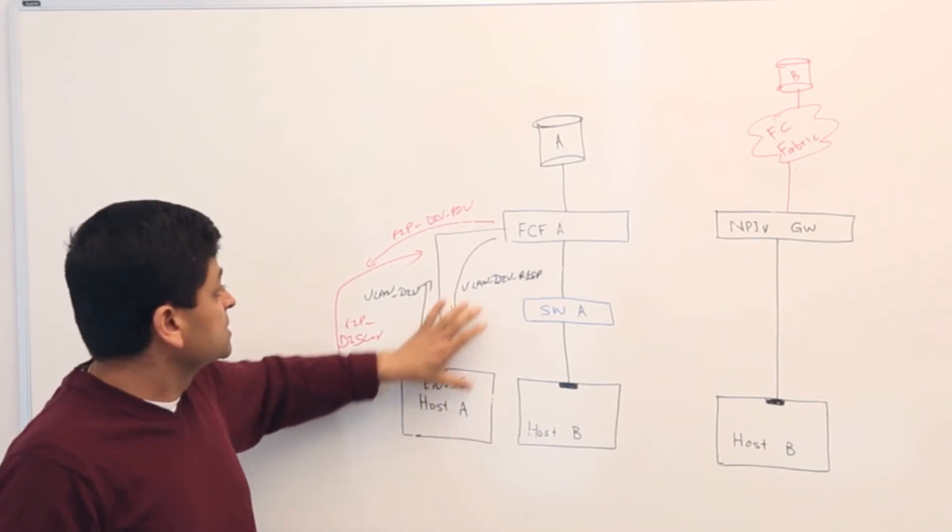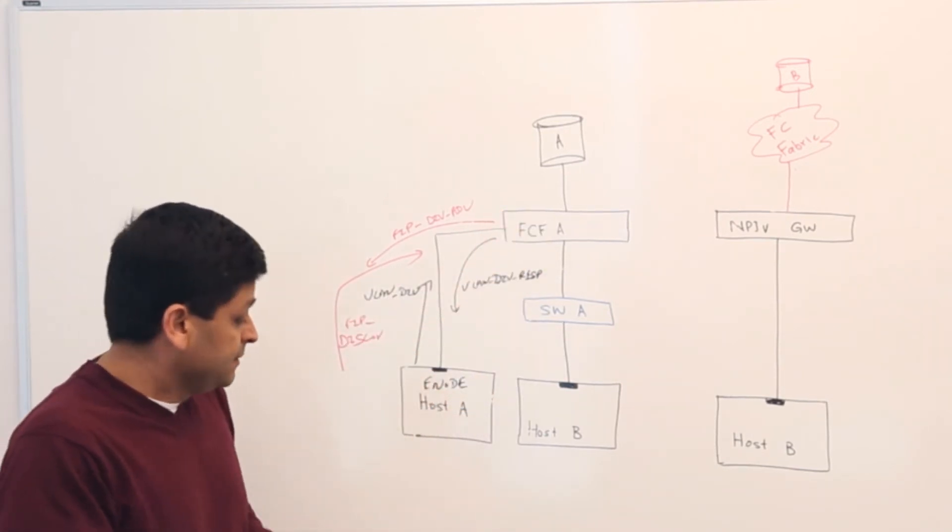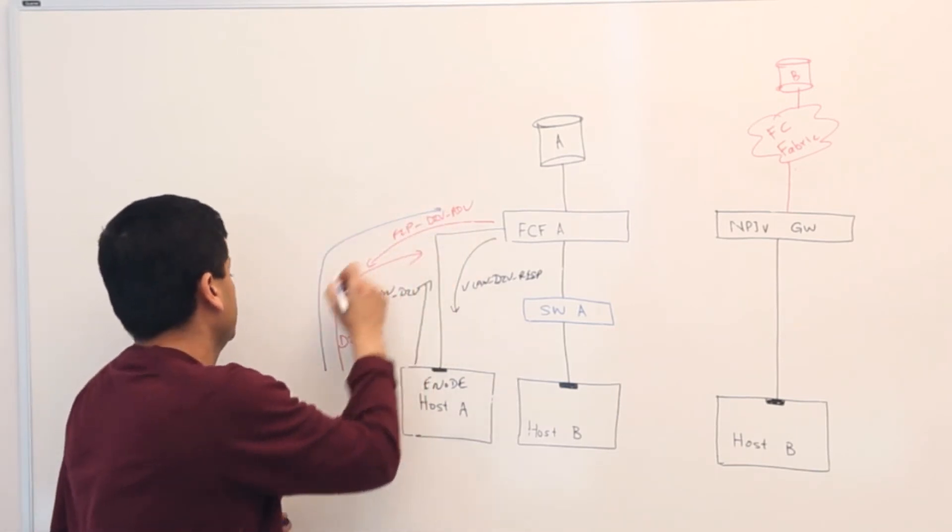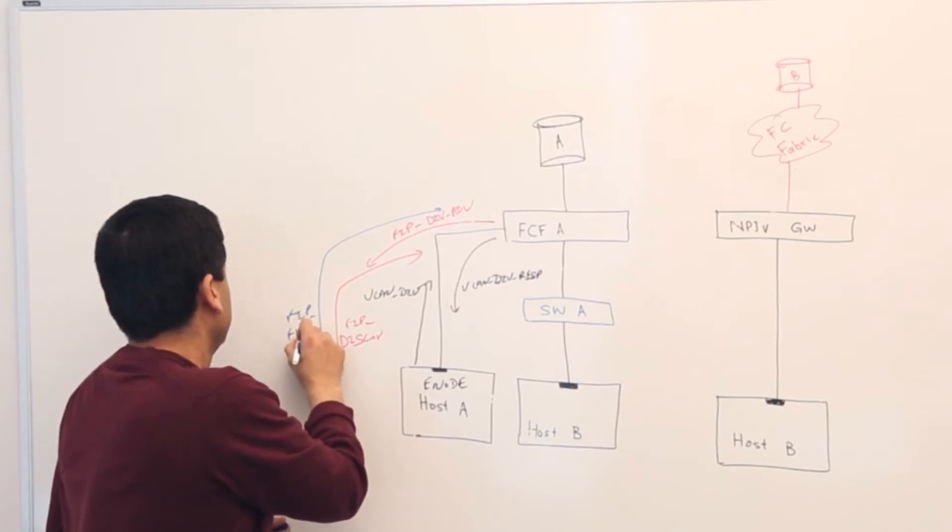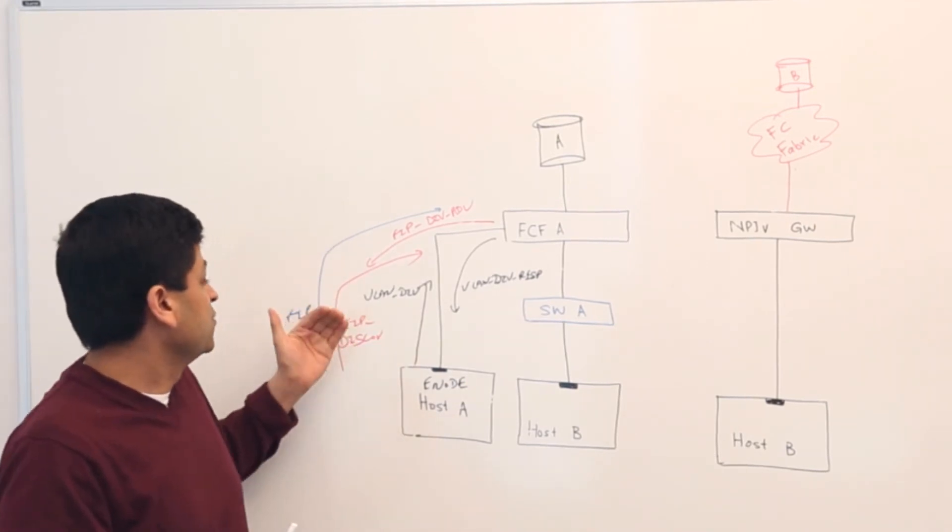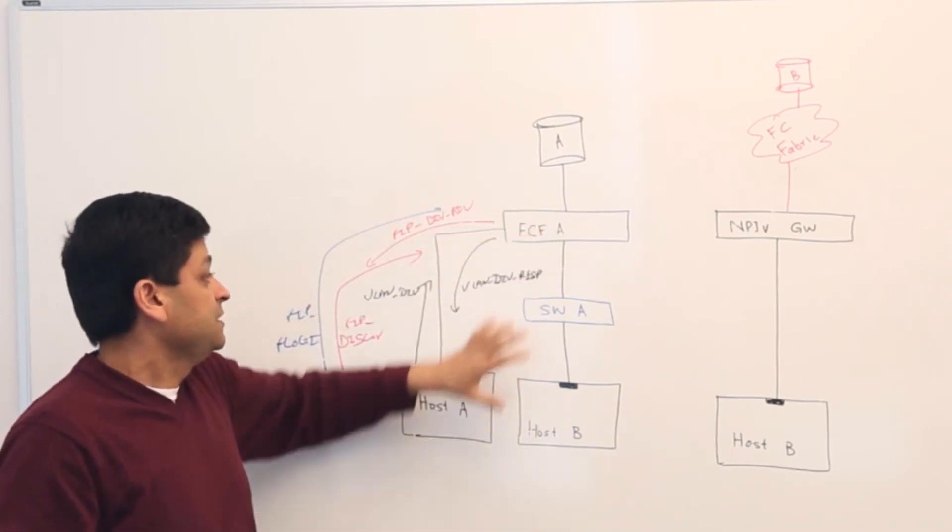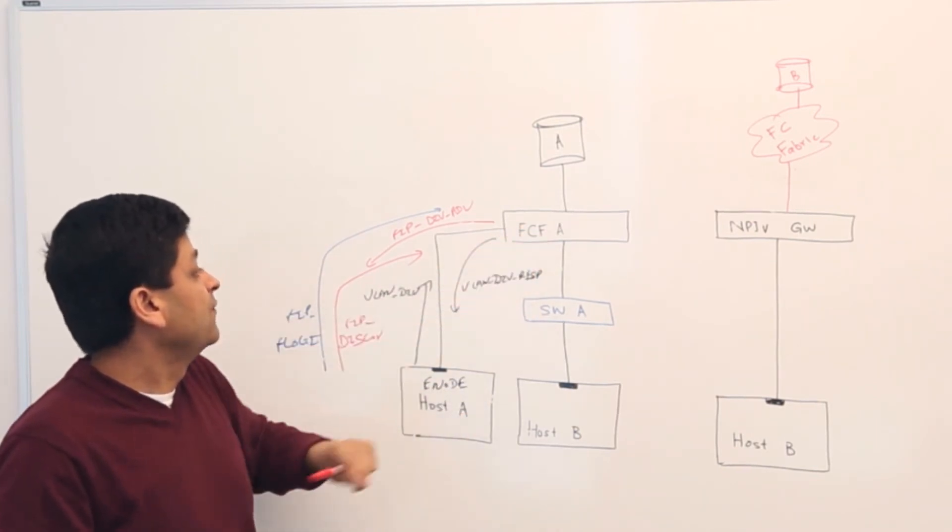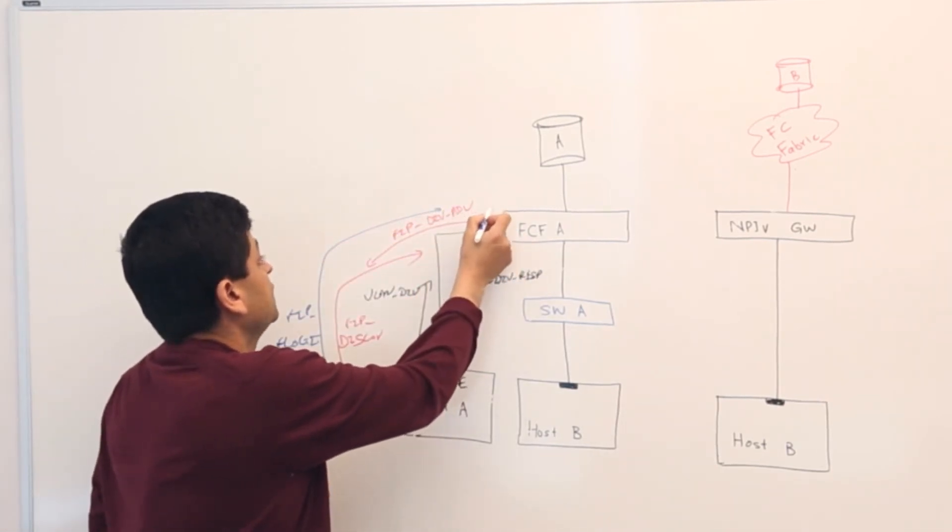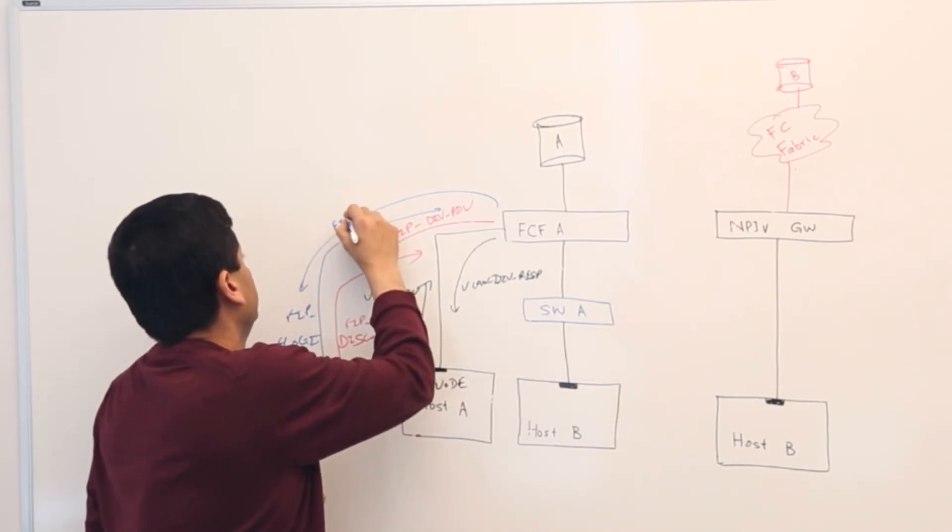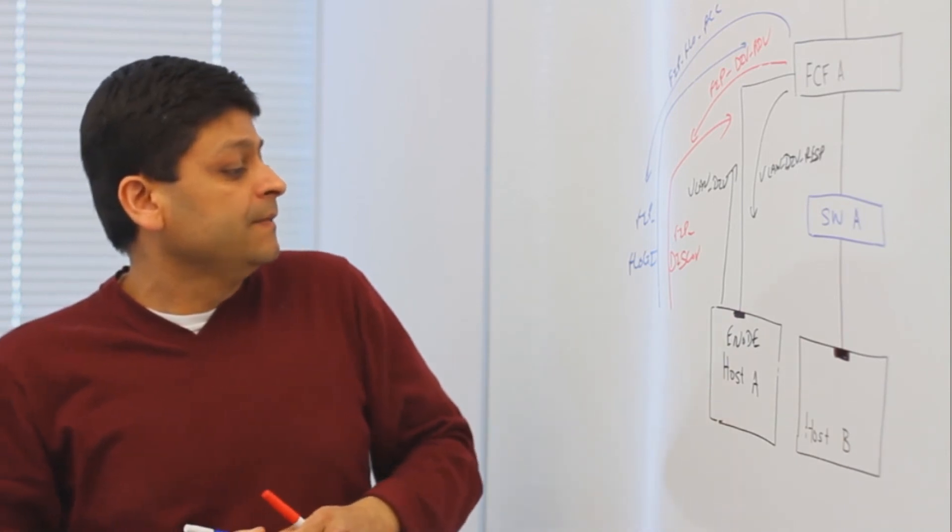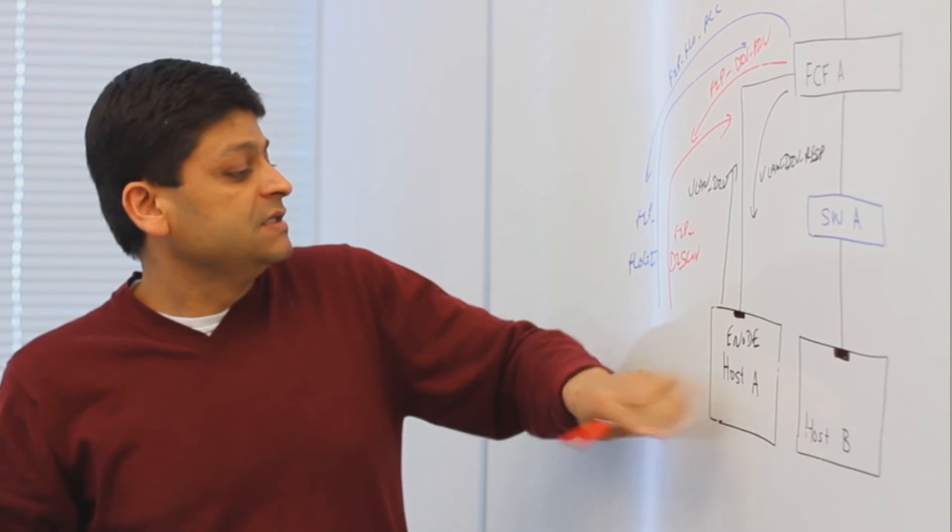Once this enode or the host discovers about this FCF, this enode will send the FIP F-loggy frame. This F-loggy frame is similar to what we saw in Fibre Channel network where the devices actually end up sending F-loggy to acquire address from the switch. So when this enode sends a FIP F-loggy frame, this FCF or the switch will respond with a FIP F-loggy accept. And that will contain the FC ID of this enode or this host.